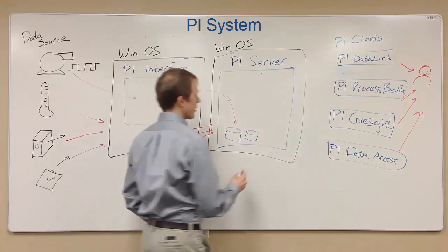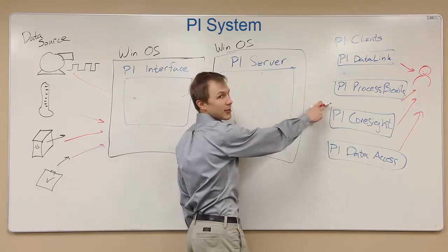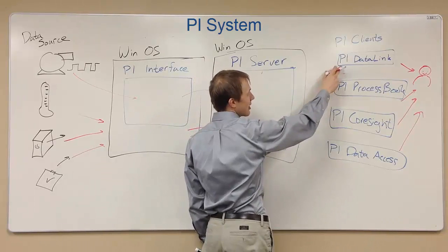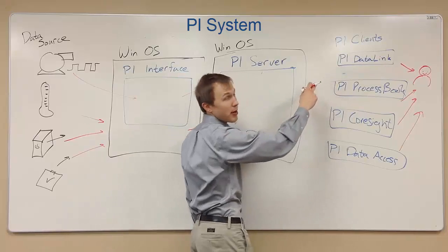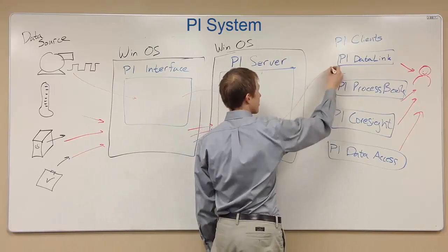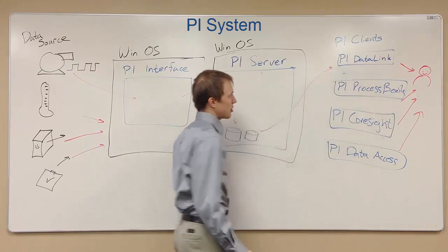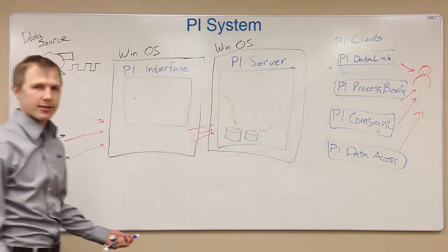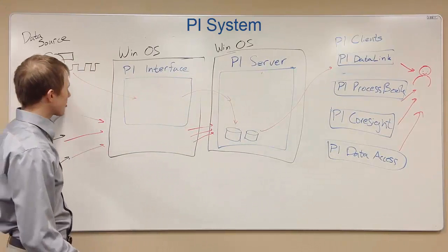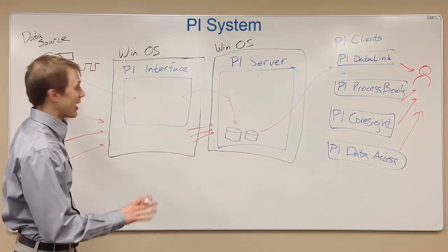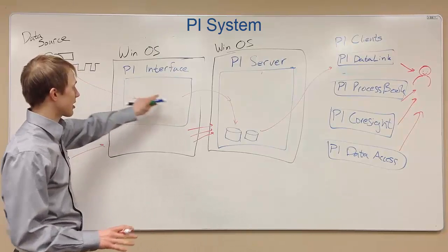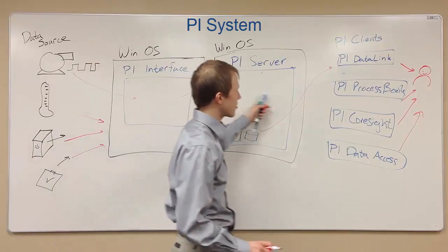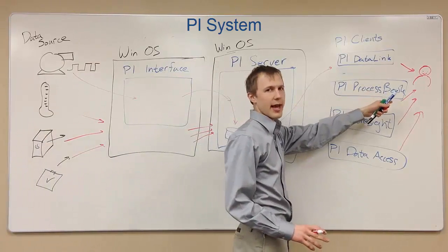From there, the PI Server responds to queries from clients. For example, DataLink will say, 'PI Server, I want to see the last seven days of data for that pump,' and the PI Server will serve out the data and show it to the user. That is a basic PI System: a data source, which is not made by OSI Soft, contacted by an interface, which sends the data to a PI Server, and then some way for users to see the data.